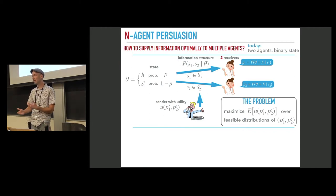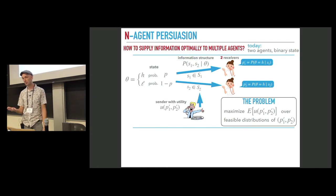Equivalently, we're going to think of this problem as maximizing the expected utility over joint distributions of beliefs, P1 prime and P2 prime, that can be induced by some information structure. Such distributions we will call feasible.